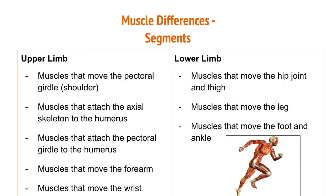The upper and lower limbs are often grouped by the actions and attachments they are involved in. The upper limbs move the shoulder, humerus, forearm, and wrist. The lower limbs move the hip, thigh, leg, foot, and ankle.